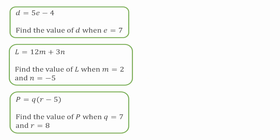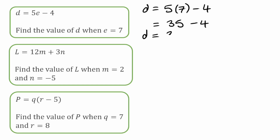For this first practice example, we've got D is equal to 5E take away 4. We want to find the value of D when E is equal to 7. I'm going to swap the E for 7, and because we're multiplying it by 5, I'm going to put it in a bracket. So we'd have D is equal to 5 times bracket 7, take away 4. Following our order of operations, we do 5 times 7 first, which gives us 35. Then 35 take away 4 is 31. So D is equal to 31.